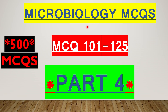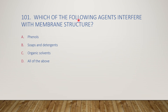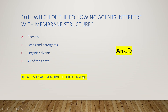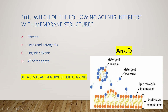The first question is: which of the following agents interfere with membrane structure? Options are phenols, soap and detergents, organic solvents, or all of the above. The right answer is option D, all of the above. All these chemical agents act as surface-reactive chemical agents, and when added to the lipid bilayer or lipid membrane, they destabilize the lipid structure.